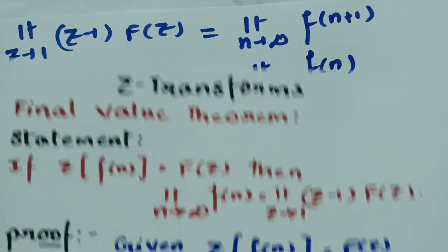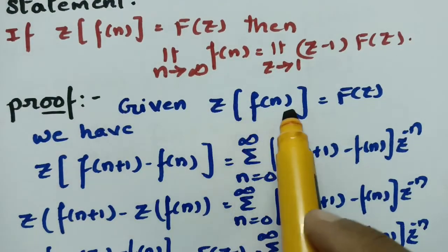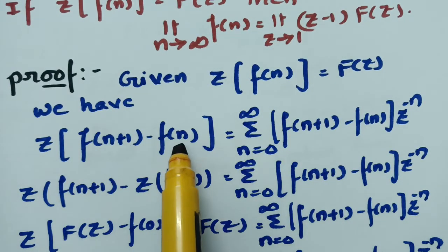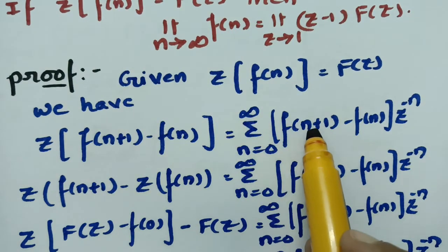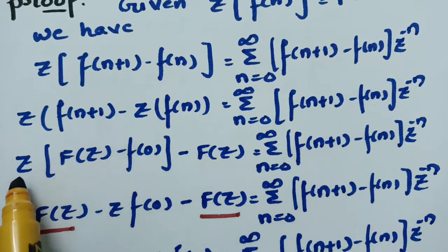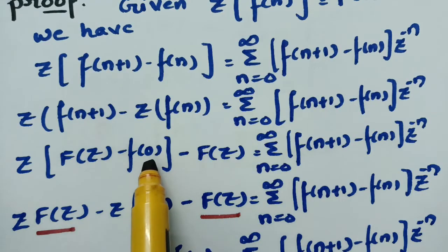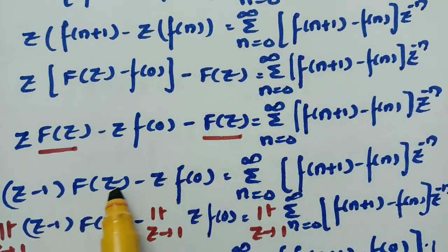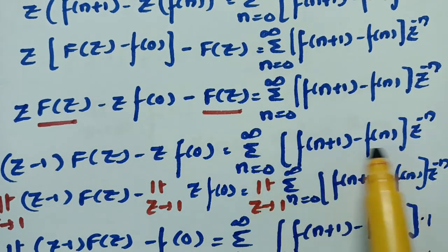Let me explain once again. Z transform of f(n) is given as F(z) and we need to show the theorem. Taking Z transform of f(n+1) minus f(n) and using the definition, this equals sigma from n equals 0 to infinity of [f(n+1) minus f(n)] into z to the power minus n. By the shifting theorem, f(n+1) gives capital F(z) minus f(0), and the other term is capital F(z).